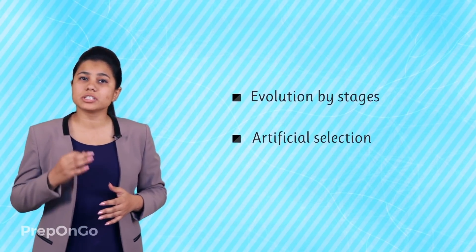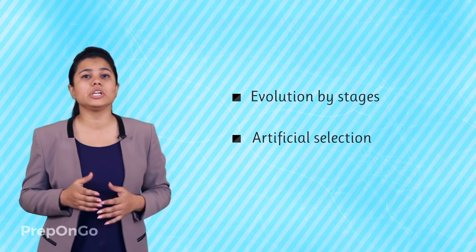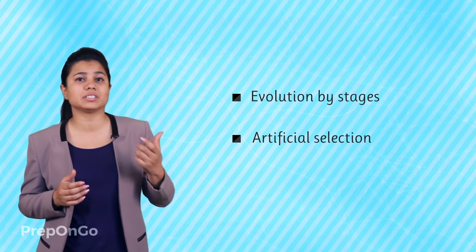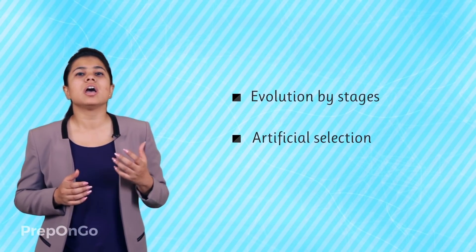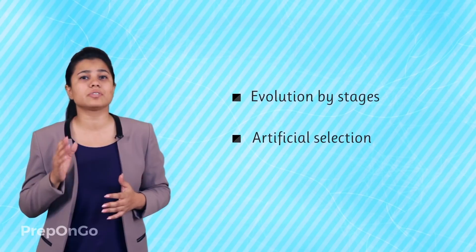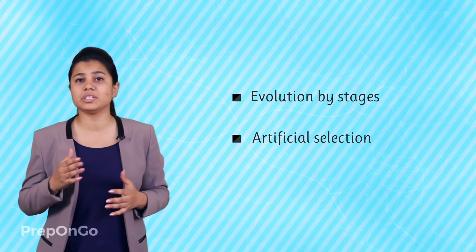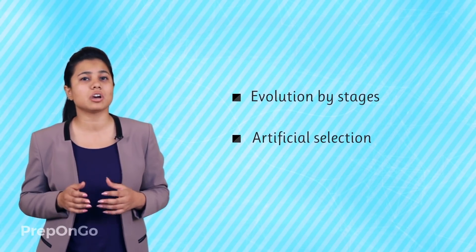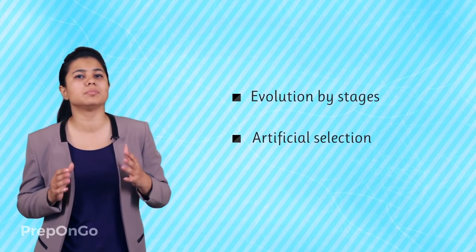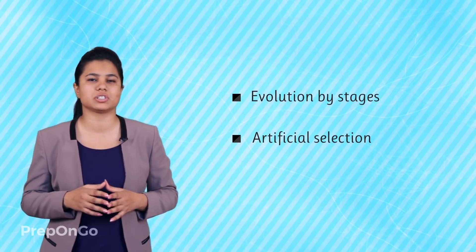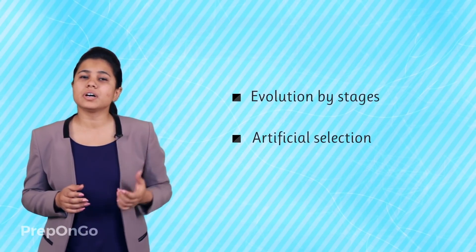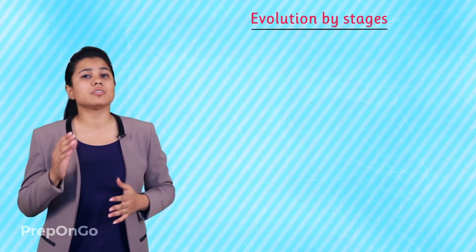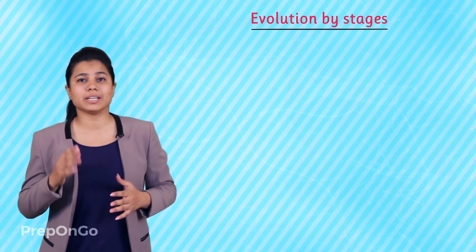So in this video we are going to see how evolution takes place in stages and how different varieties of cabbage that we see are actually a result of evolution by artificial selection. First let's see some examples of evolution by stages.